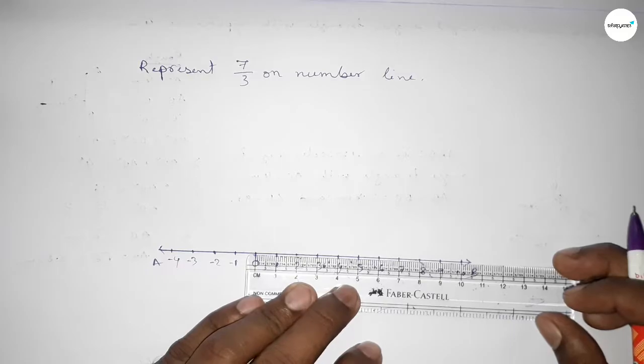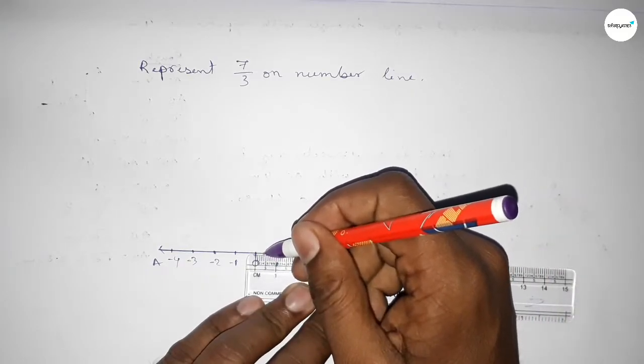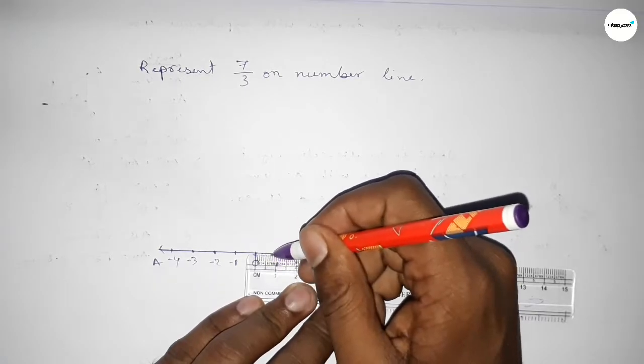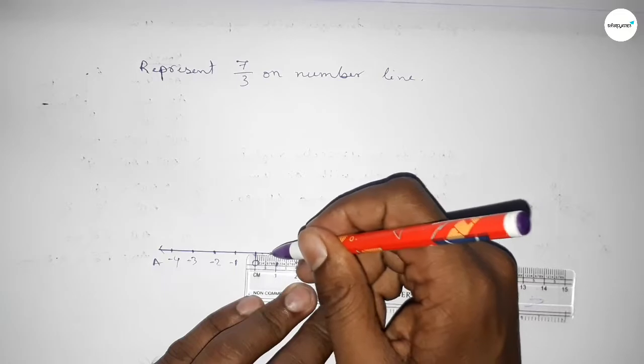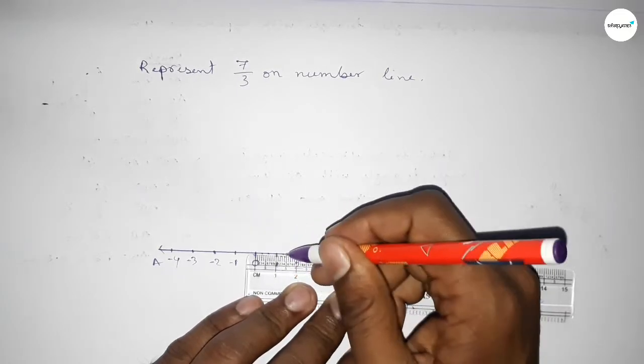So first dividing the distance between zero to one. So this is 0.3 something approximately, so this is the first part, and this is 0.6 something approximately, so this is the second part. Similarly, dividing the distance between one to two.